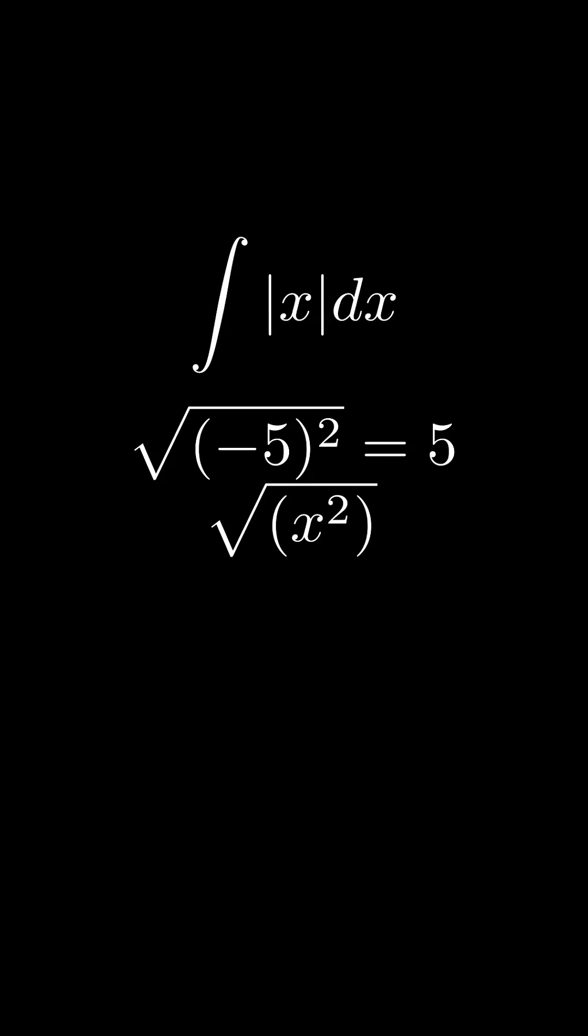Now let's plug in 5 into this function. We get the square root of 25 again, which is also 5. So plugging in 5 into the function gives 5. So this function is the same as the absolute value of x.